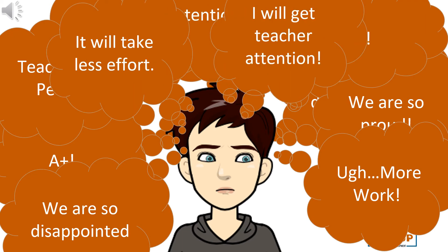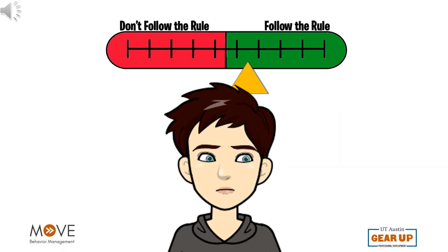Billy is evaluating all these motivators at the same moment. He is considering how likely they are to happen, how much he values each outcome, and what are all the costs associated with his decision. He will only consider things that occur to him. At the end of the thought process, Billy makes a decision based on the factors he considered.